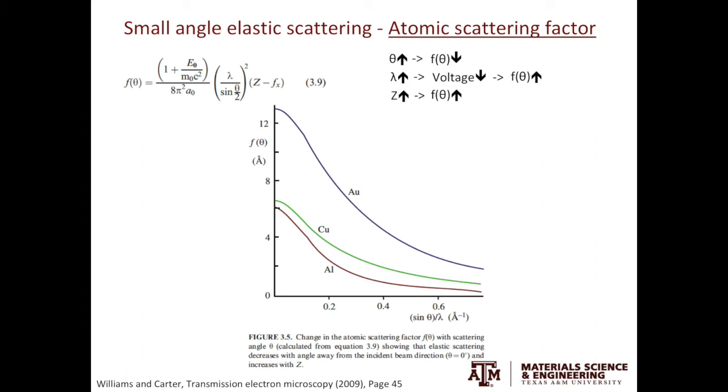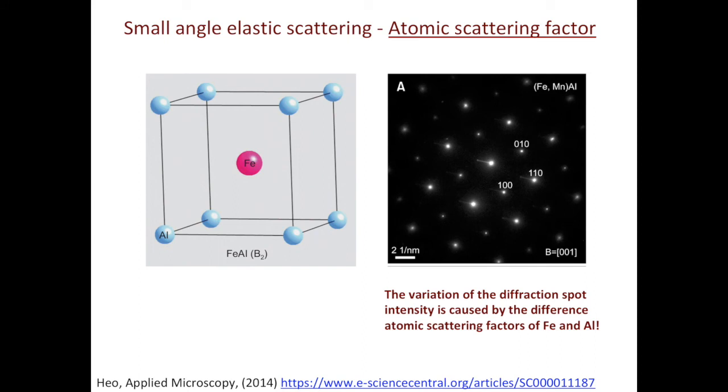Why is the concept of the atomic scattering factor important? It is because it determines the intensity of diffraction spots we see. I took an example from a paper published by Heal in the journal called Applied Microscopy. Iron-aluminum is an intermetallic. If you look at the 001 planes, the first plane is all aluminum, the second plane is just iron, the third plane is aluminum again. Because aluminum and iron have different atomic scattering factors, it will lead to different intensities in diffraction spots. It is illustrated by the diffraction pattern on the right. Looking at the 001 family of planes, you have dim, bright, dim, bright, dim, bright kind of intensities. If the sample were pure iron or pure aluminum, you will not see this alternating intensity in the diffraction pattern.